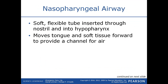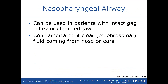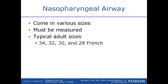Nasopharyngeal airways, or nasal trumpets, are soft flexible tubes inserted through the nostril into the hypopharynx. They also move the tongue and soft tissue forward, providing a channel for air. Even patients with an intact gag reflex — such as a stroke patient, a heavily intoxicated patient, or a head-injured patient — may tolerate a nasopharyngeal airway. It is also useful when the patient's jaws are clenched and you can't open their mouth. Nasal pharyngeal airways are contraindicated if cerebrospinal fluid is leaking from the nose or ears. They come in different sizes measured in French — typically 28, 32, and 34 French for adults.